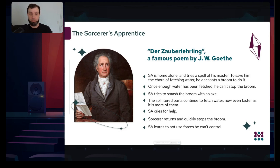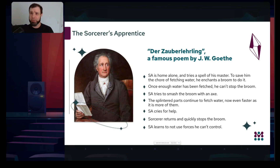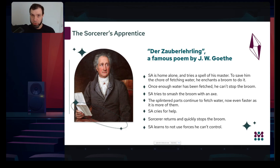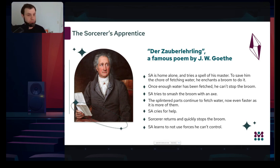It roughly goes like this: the Sorcerer's Apprentice lives with his master, and one day the master leaves him alone. The apprentice thinks he can do all the chores by magic. The main chore he wants to avoid is fetching water for a bath, so he enchants a broom, which develops two arms and fetches water — mission accomplished, or so it seems.